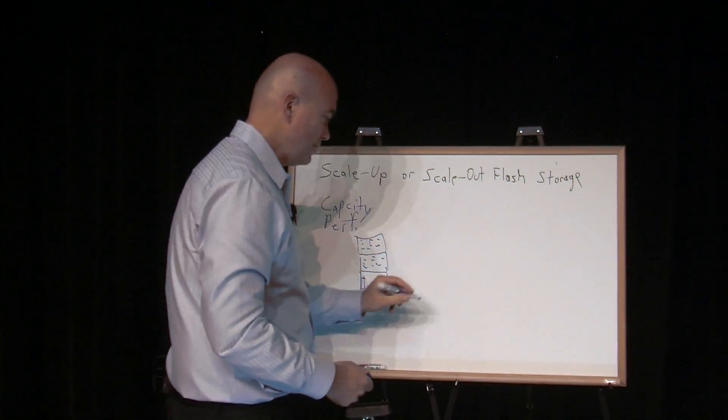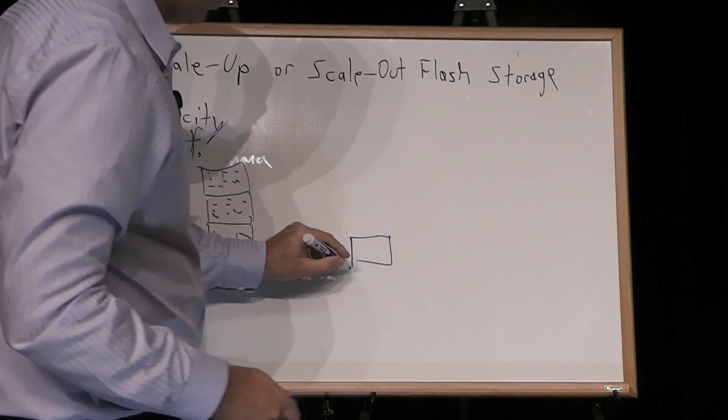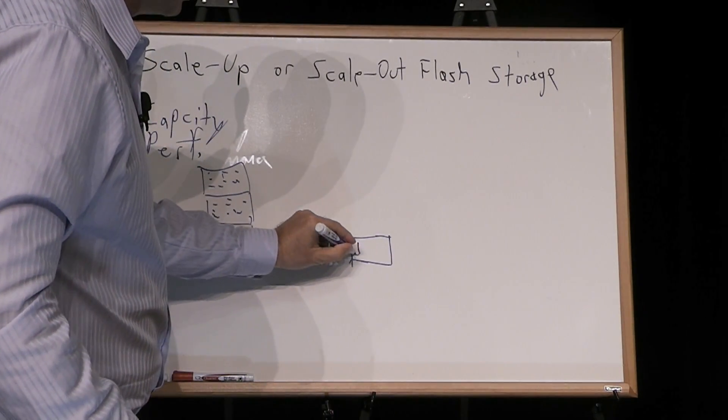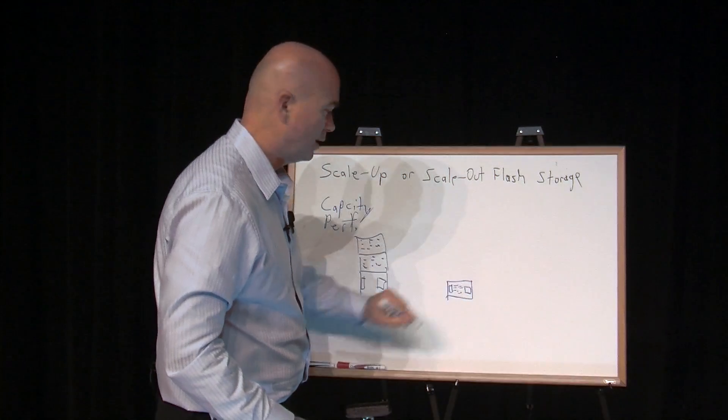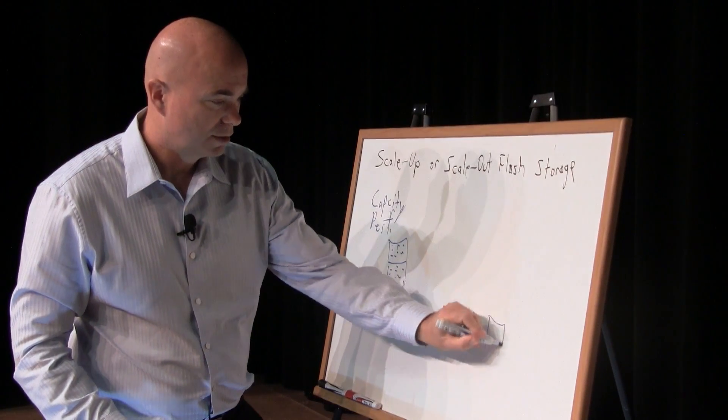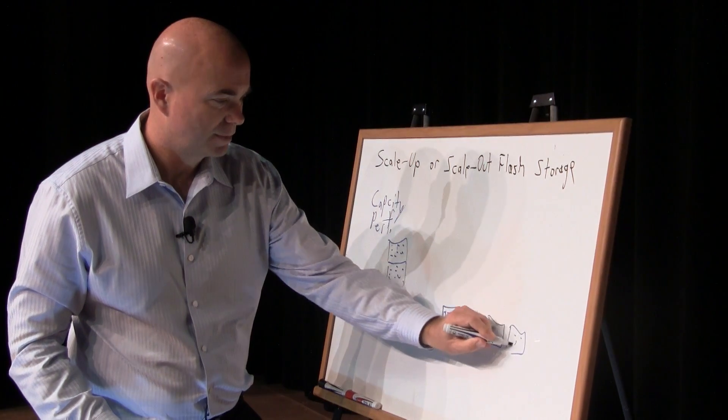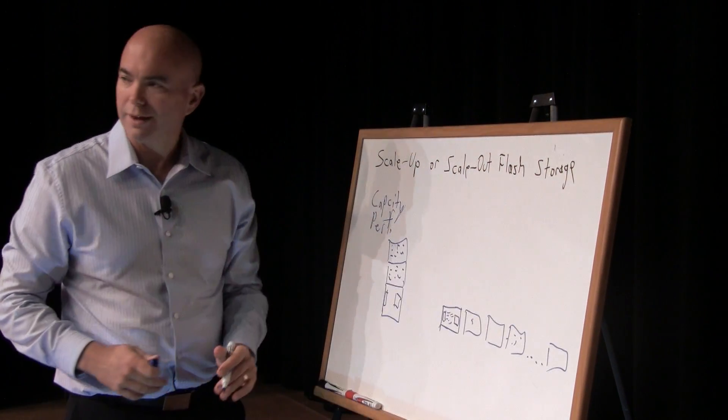A scale-out strategy is a little different in that generally, all the capacity and the performance is inside of one unit. And then when you need additional performance or capacity, you buy another one, and another one, and another one. And essentially, this in theory can go to infinity.